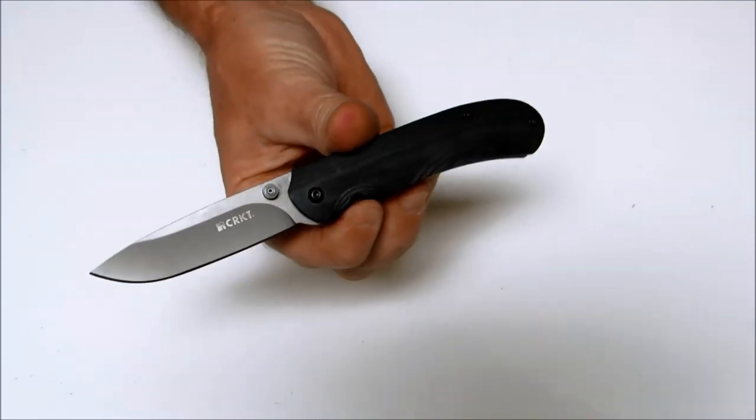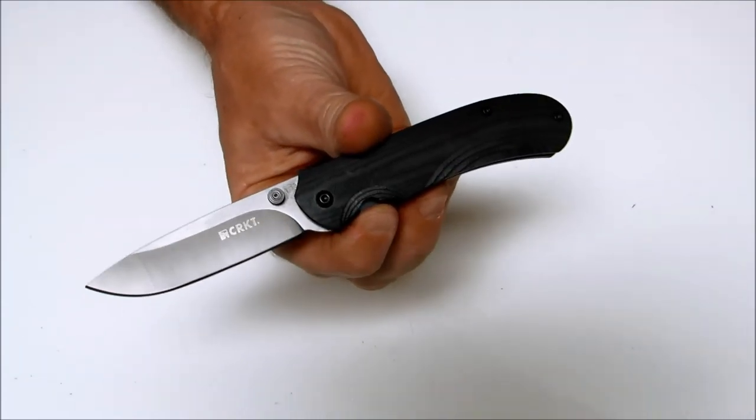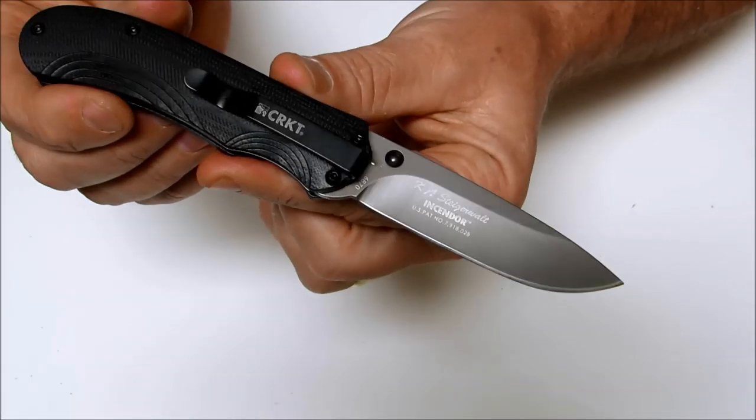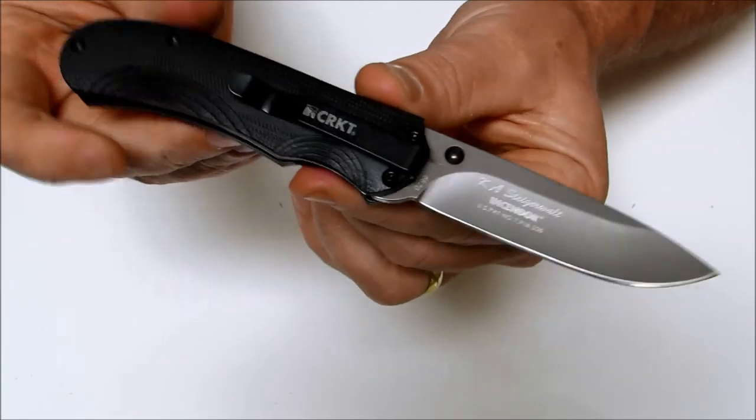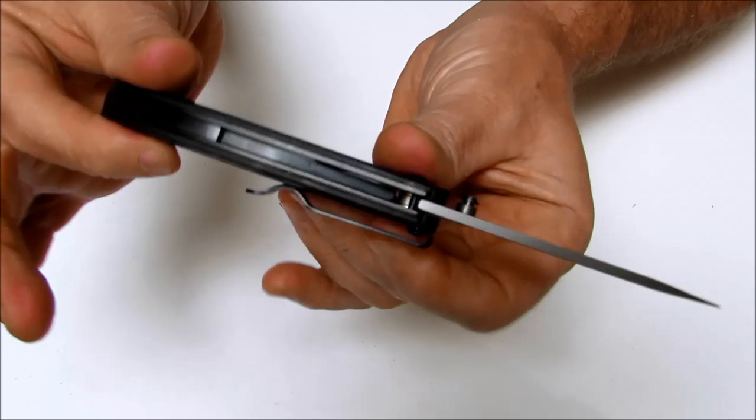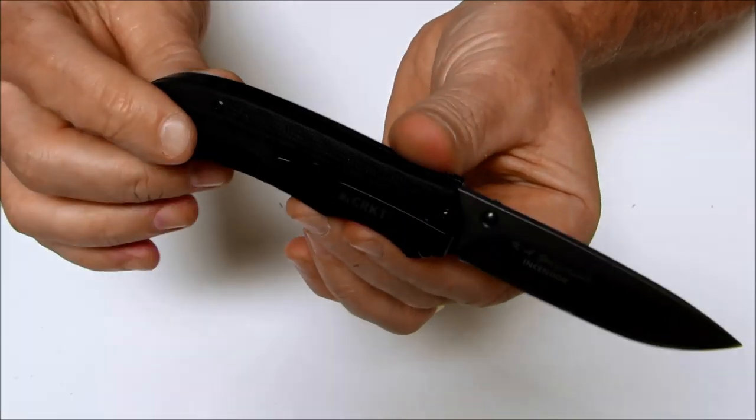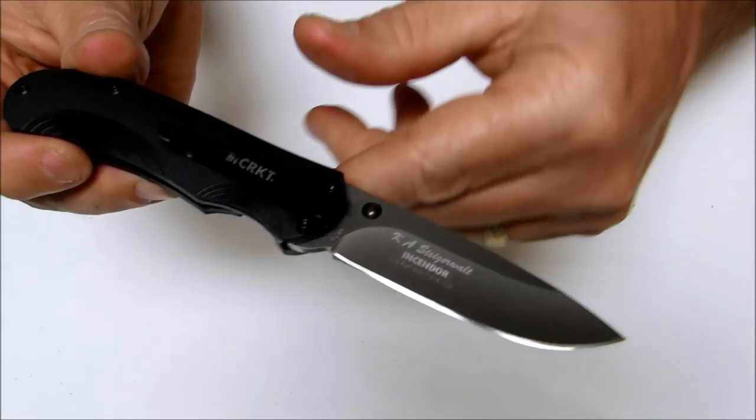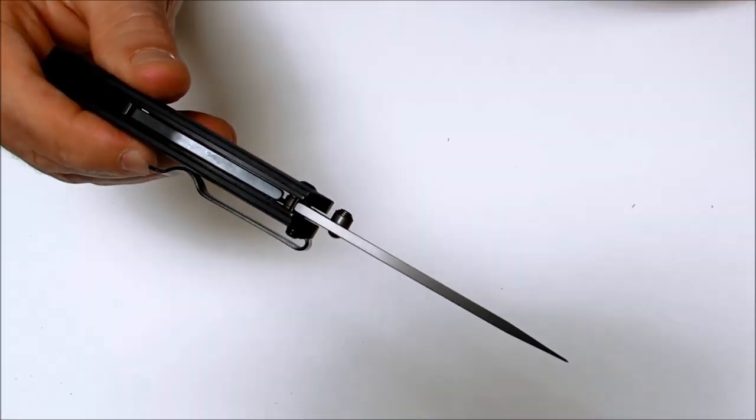Overall open it measures in at 6.94 inches. Closed 3.97 inches and it weighs in at 3.8 ounces. The blade length 2.96 inches. The blade thickness 0.11.